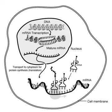RNA polymerase reads the DNA strand from the 3' end to the 5' end, while it synthesizes a single strand of messenger RNA in the 5' to 3' direction. The general RNA structure is very similar to the DNA structure, but in RNA the nucleotide uracil takes the place that thymine occupies in DNA. The single strand of mRNA leaves the nucleus through nuclear pores and migrates into the cytoplasm.